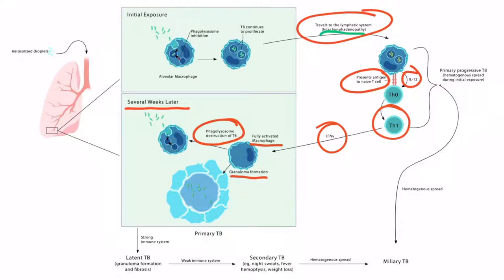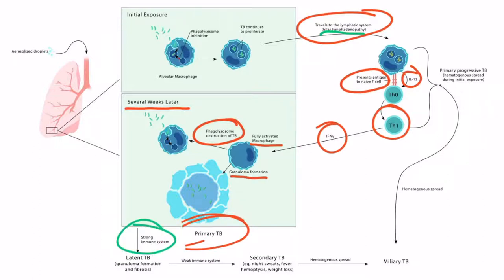This entire pathway is considered primary TB — the patient is exposed, the pathogen travels to lymph nodes, and macrophages are fully activated. Most of the time, a patient with primary TB is asymptomatic. Eventually many pathogens are destroyed and the remaining ones are walled off by granulomas. If the patient has a strong immune system, primary TB resolves through granuloma formation and fibrosis, and this is referred to as latent TB — the pathogens are still present but suppressed by macrophages and contained by granulomas.